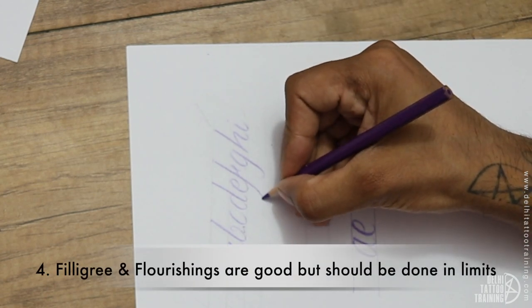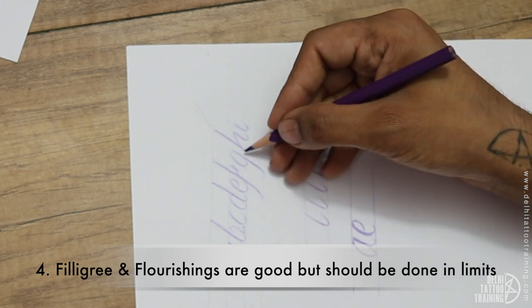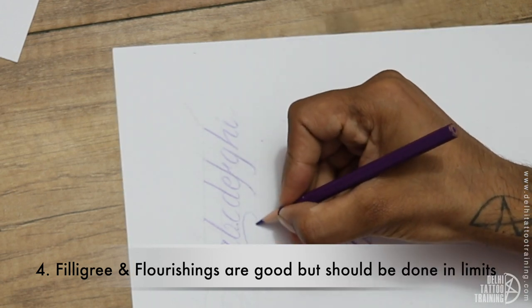Coming to the next point, point number 4: filigree and flourishing are good but not to be done more than required.